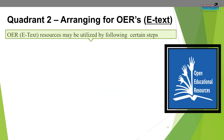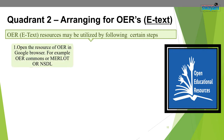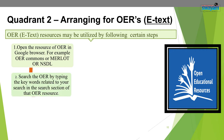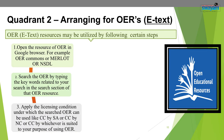Let us discuss OERs in MOOCs with Moodle. This is the second quadrant — arrangement of e-content in the course using various forms of OERs. For e-text, open the OER resource in a browser, for example OER Commons or Merlot. Search the OER by typing keywords in the search section. Then apply the licensing condition under which the searched OER can be used, such as CC BY SA, CC BY NC, or whichever is suited to your purpose.